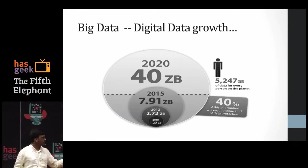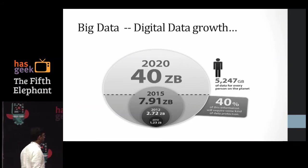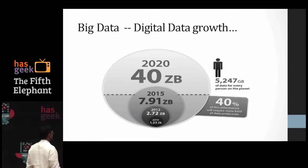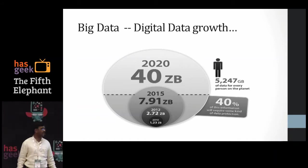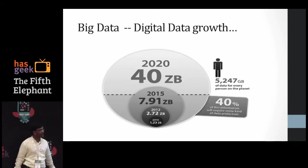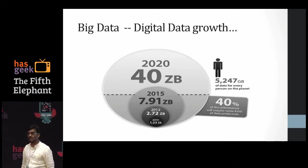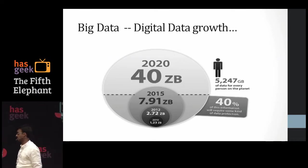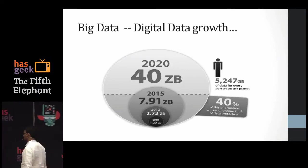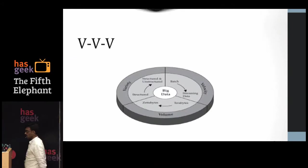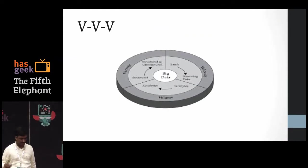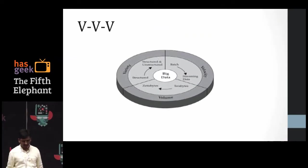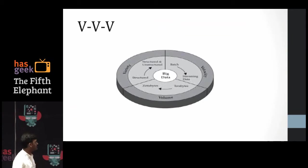If you look at how data grew from 2010 to 2012 — 40 zettabytes — predictions are happening. The daily data population is huge and it will only grow more. Big data deals with three or four V's: variety, velocity, and volume.